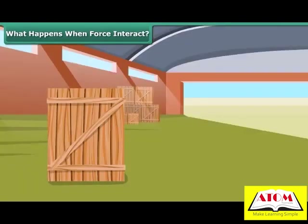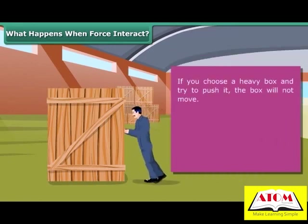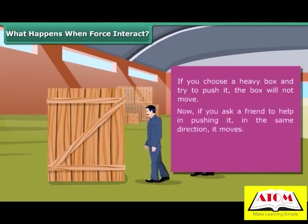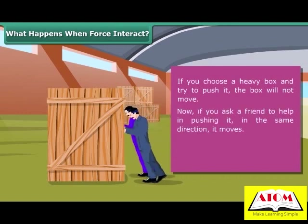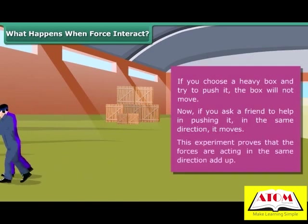What happens when forces interact? If you choose a heavy box and try to push it, the box will not move. Now if you ask a friend to help in pushing it in the same direction, it moves. This experiment proves that forces acting in the same direction add up.